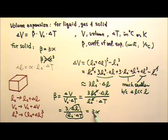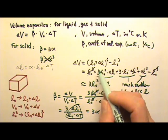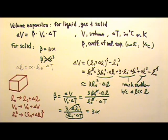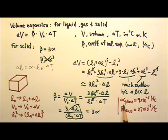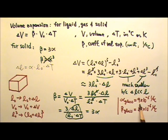For example, the alpha of normal glass is 9 times 10 to the negative 6, while beta is 3 times that: 27 times 10 to the negative 6.